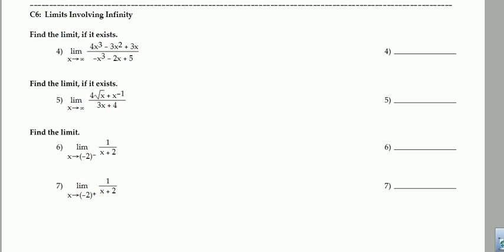Number 4: we're doing limits involving infinity. We notice that x is going to infinity, and we have the same degree in the numerator and the denominator — x cubed and x cubed. So as x goes to infinity, we look at just the leading coefficients, which are 4 and negative 1, and our limit would be the same as 4 divided by negative 1, which is negative 4. Basically, infinity is so large that the rest becomes insignificant, and we're approaching negative 4.